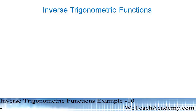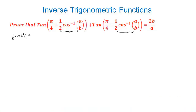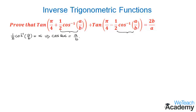Hello. In this video we are going to prove this example where we have the common term 1/2 cos inverse (a/b). So let us consider the common term 1/2 cos inverse (a/b) as alpha. Then transferring cos inverse and 2 to the right hand side, we get cos 2α = a/b. Let us name this as equation 1.